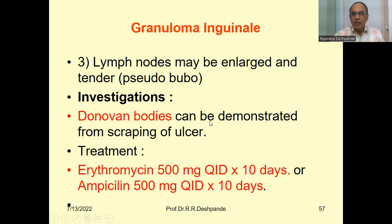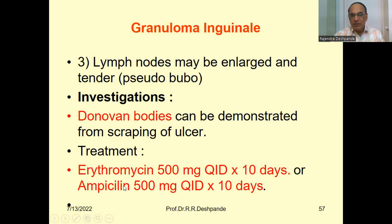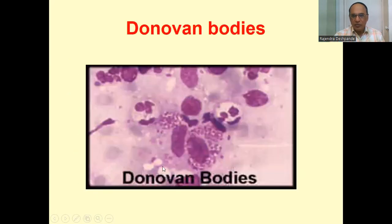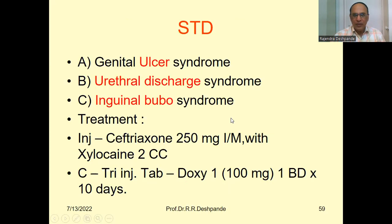For investigations, Donovan bodies can be demonstrated by scraping of the ulcer. Treatment is erythromycin 500 mg four times a day for 10 days, or ampicillin 500 mg four times a day for 10 days. This is an image of Donovan bodies under the electron microscope.